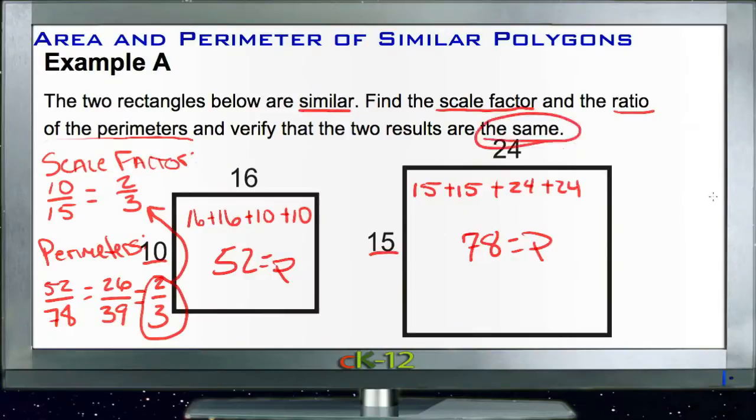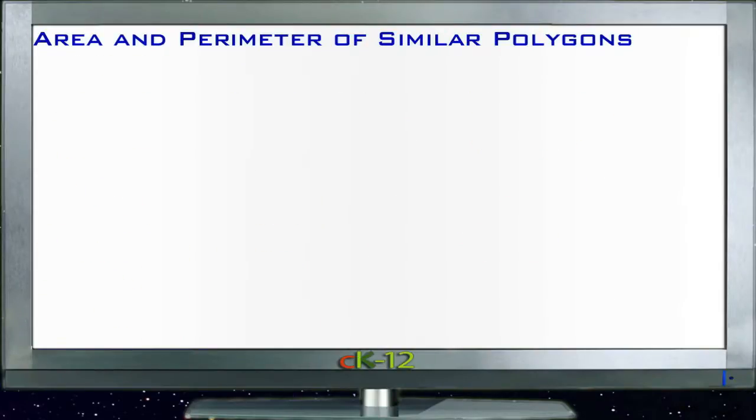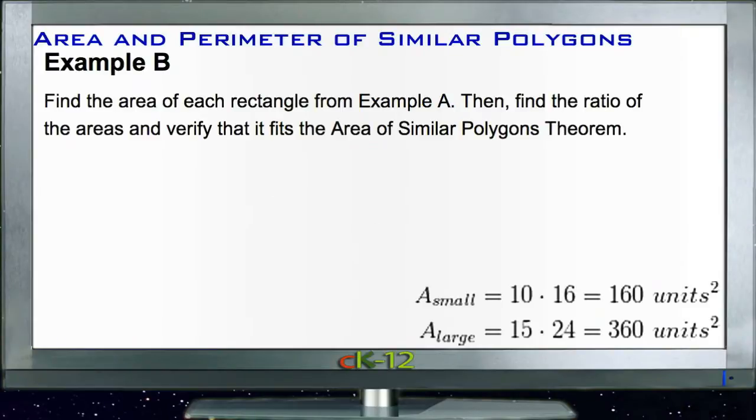Example B: Find the area of each rectangle from Example A, and then find the ratio of the areas and verify that it fits with the area of similar polygons theorem. That theorem, you may recall, was that if you have the ratio of two figures as m over n, then the area of those two similar polygons will be in the ratio of m over n squared.